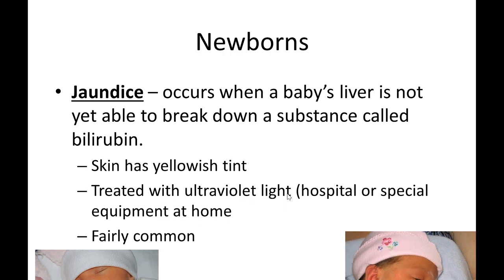Jaundice is treated with ultraviolet light in the hospital using special equipment — a blue-white light that the baby is placed under. If bilirubin levels are around 12 to 15, we may advise the family to give the baby sunlight at home. If the level is dangerously high — above 15 to 12 or more — the baby needs hospital treatment with UV phototherapy.